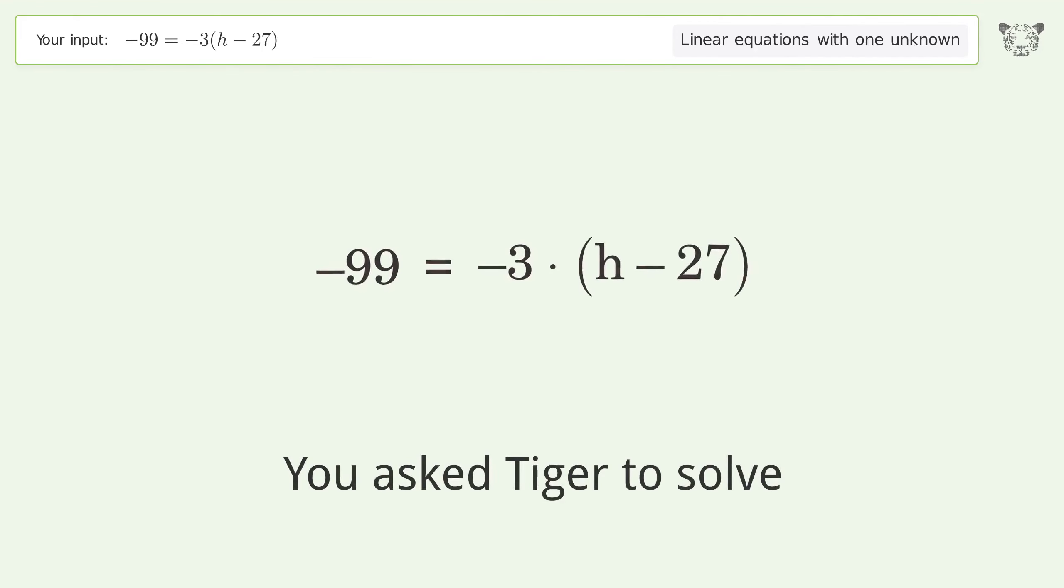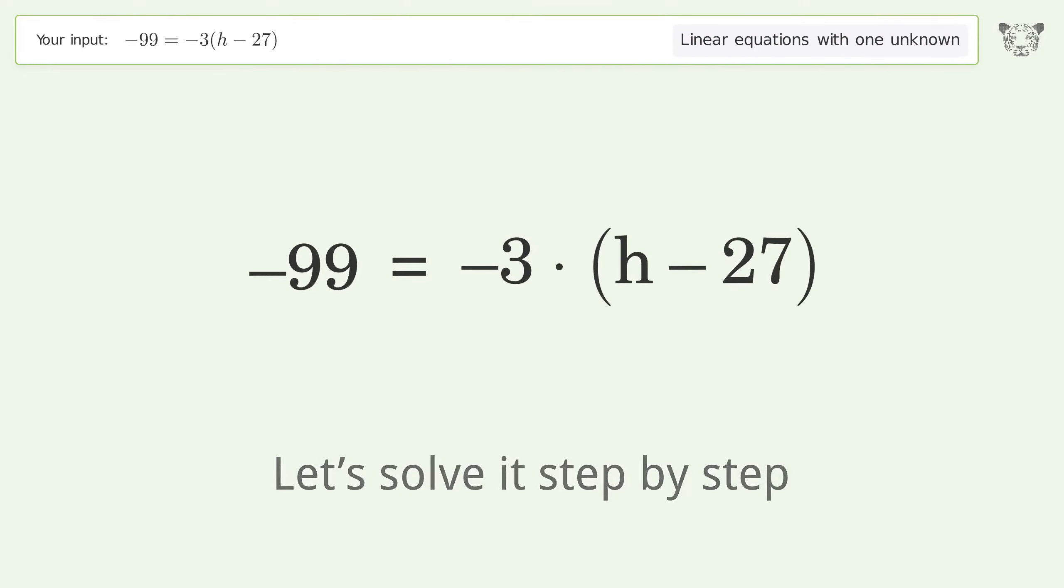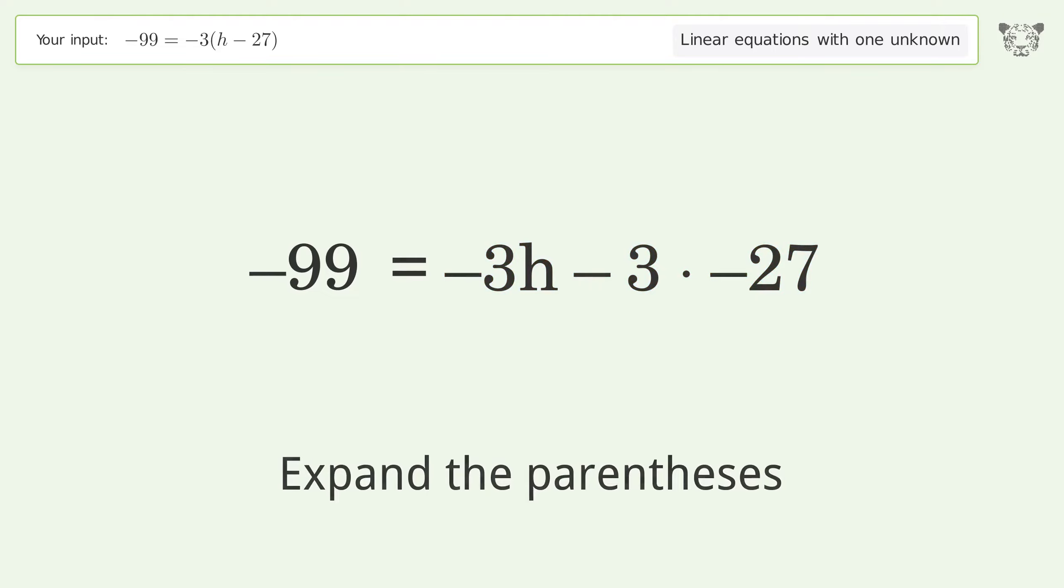This deals with linear equations with one unknown. The final result is h equals 60. Let's solve it step by step. Simplify the expression, expand the parentheses, simplify the arithmetic, and swap sides.